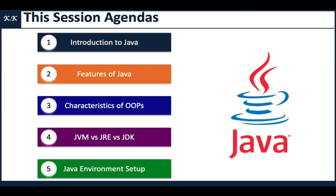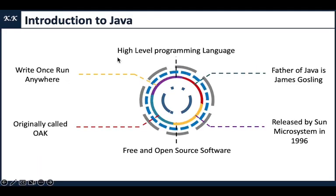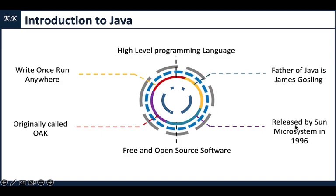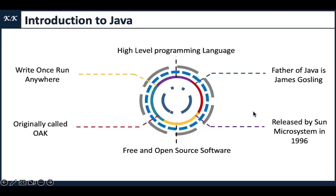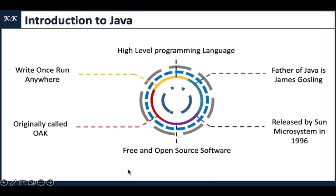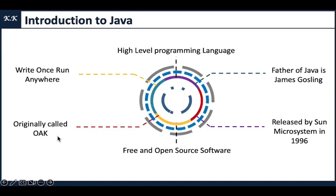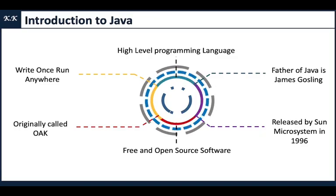Java is a high-level programming language. The father of Java is James Gosling. Java was released by Sun Microsystems in 1996. Currently, the Java copyright is with Oracle. Java is a free and open source software. Originally, Java was called Oak — you can explore what Oak stands for and put it in the comment box.